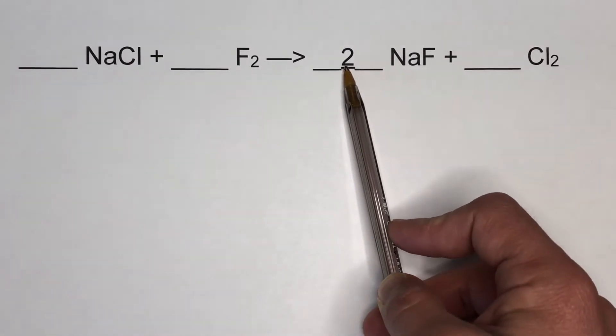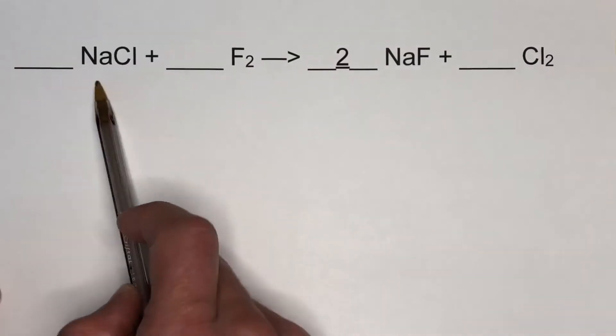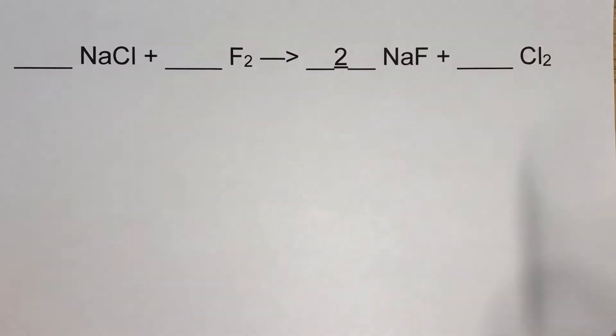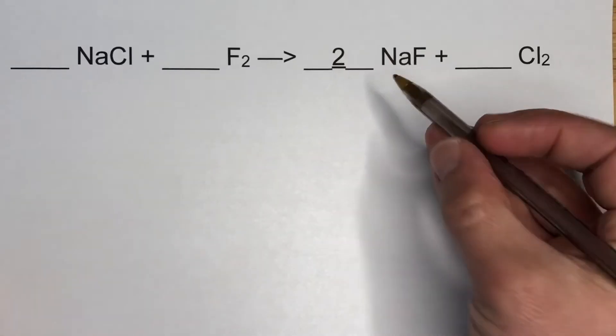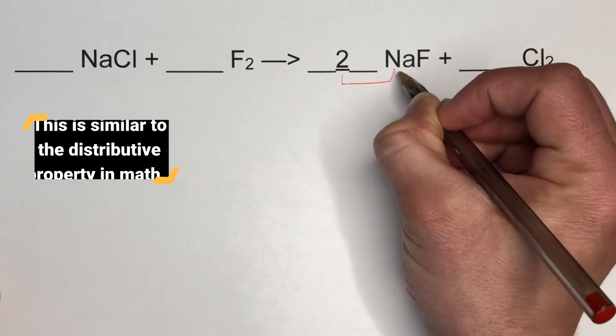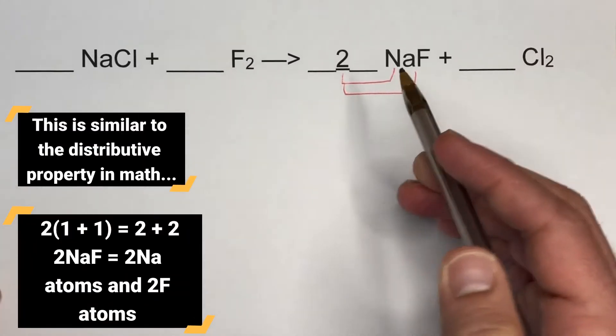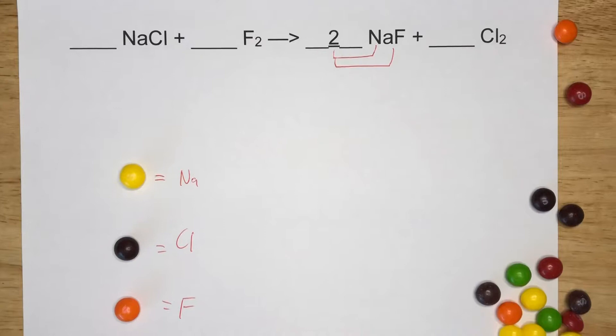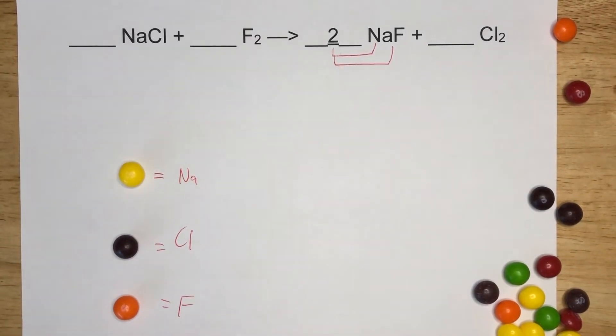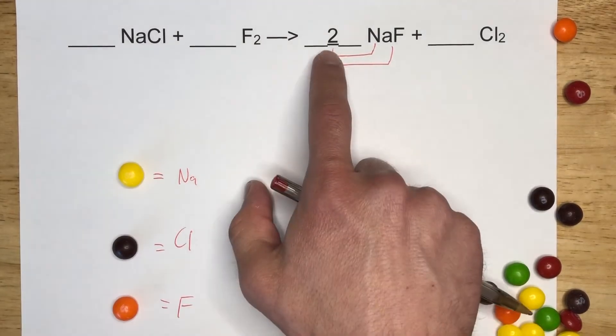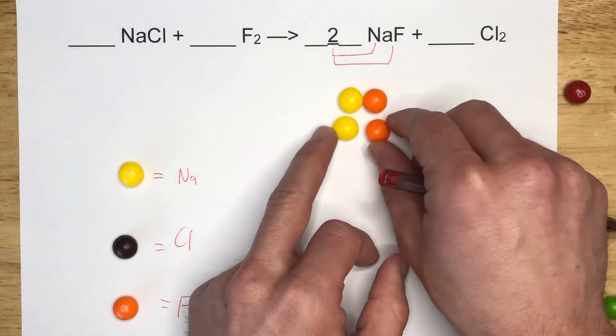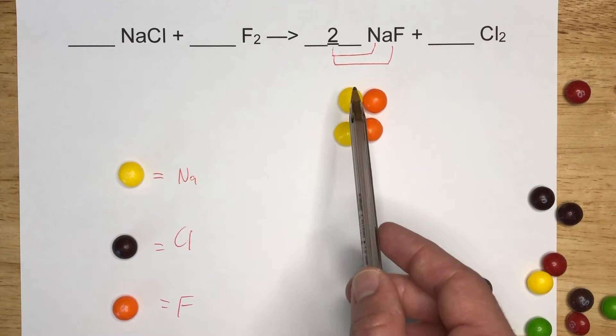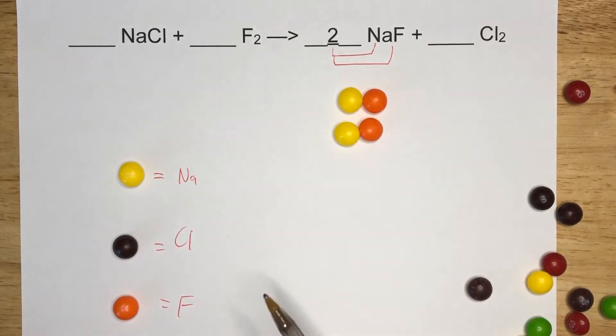In this example, we have NaCl plus F2 produces two NaFs and a certain amount of Cl2s. What this two does is it applies to the whole molecule, so it applies to the Na and the F. This means we have two Na's and two F's. To illustrate what this looks like with Skittles, we can see two NaF's. If we count up how many of each we have, there's two Na's and there's two F's. We have to have the same amount of Na's and F's on the left hand side.